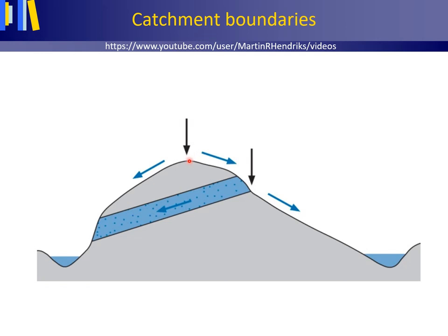Ideally, you would like the catchment to have a sealed surface at the bottom. Then there is no leakage of water out of the system, and the only location for water to leave the system — to leave the catchment — is at the outlet points of the catchment.